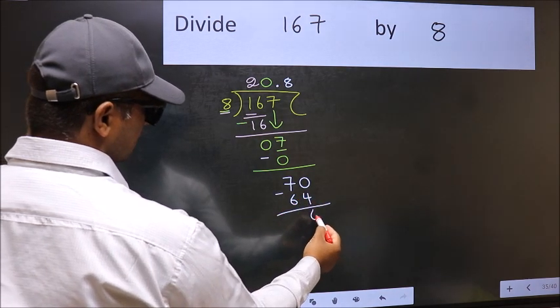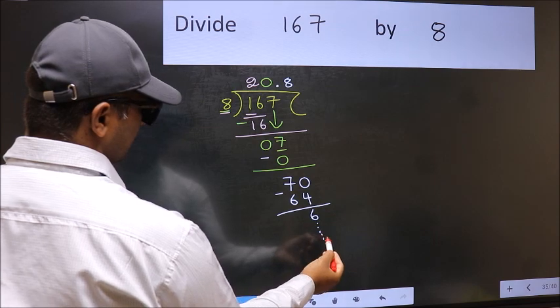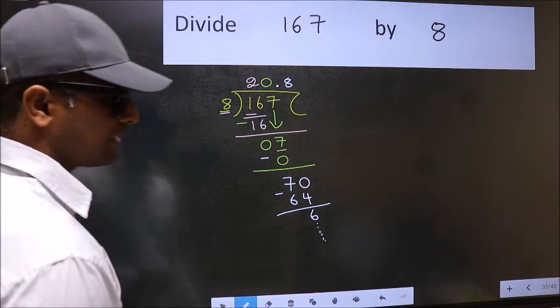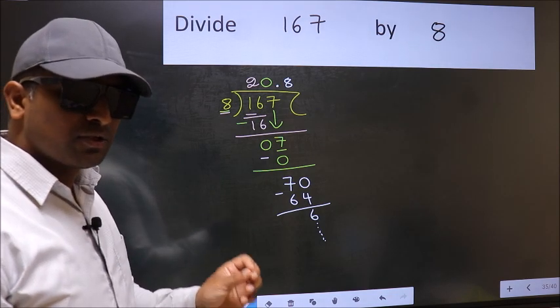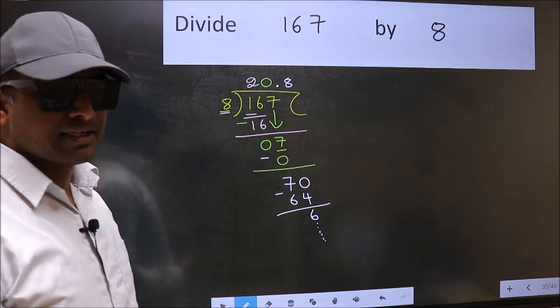Now you should subtract, we get 6, and continue the division. I am not doing that. Did you understand where the mistake happens? You should not do that mistake.